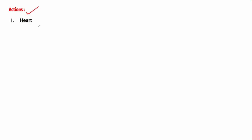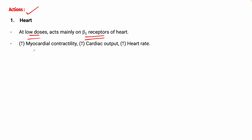Regarding actions on the heart: at low doses, dopamine acts mainly on the beta-1 receptors of the heart. The effects are: it increases myocardial contractility — that is the ability of the heart to contract — it increases cardiac output, and it increases heart rate. All of this occurs at low doses.